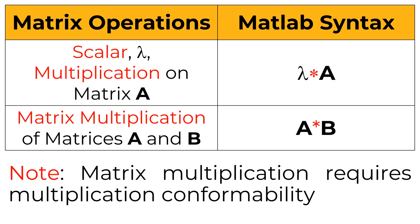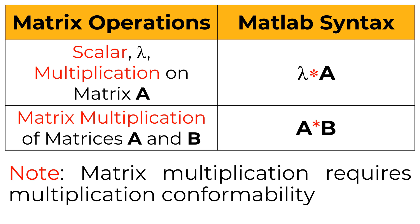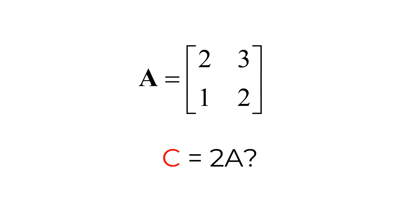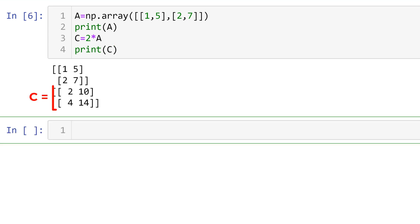For scalar multiplication, consider scalar quantity lambda and matrix A. The scalar multiplication is element-wise multiplication of the scalar quantity lambda. You can simply use lambda star sign and matrix A. Consider a given 2 by 2 matrix A. 2 times A means it needs to double all the elements in matrix A using scalar multiplication. To calculate 2A, you can use C equals 2 star A. You can see the doubled elements in matrix A.